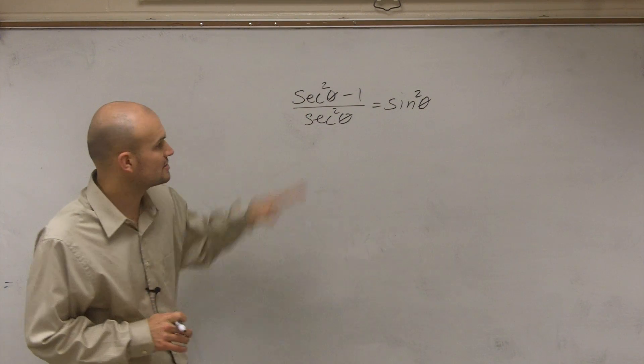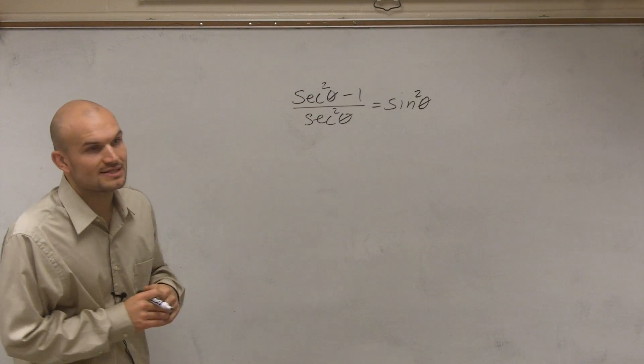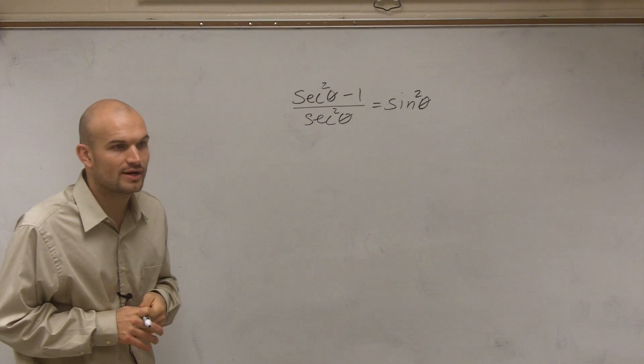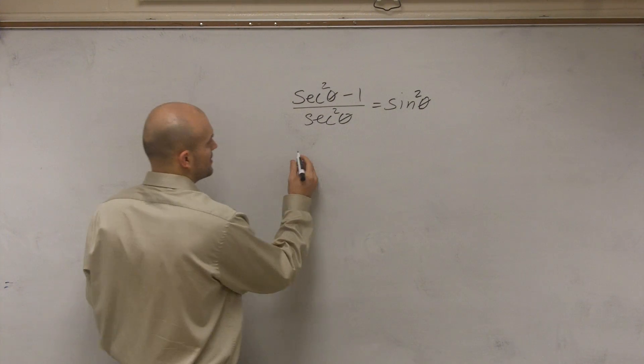So when we rewrite this as a trigonometric identity, if I have sine squared, all right, because we know we want to get this as sine. So if I take a look at secant squared, we know that secant squared is going to be 1 plus tangent squared.